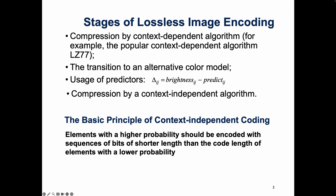There are four main stages of lossless image encoding. The first stage is compression by a context-dependent algorithm — for example, the popular context-dependent algorithm LZ77. The second is the transition to an alternative color model. The next one is usage of predictors, and the last one is compression by a context-independent algorithm. The basic principle of context-independent coding is that elements with a higher probability should be encoded with sequences of bits of a shortened length within the code length of elements with a lower probability.